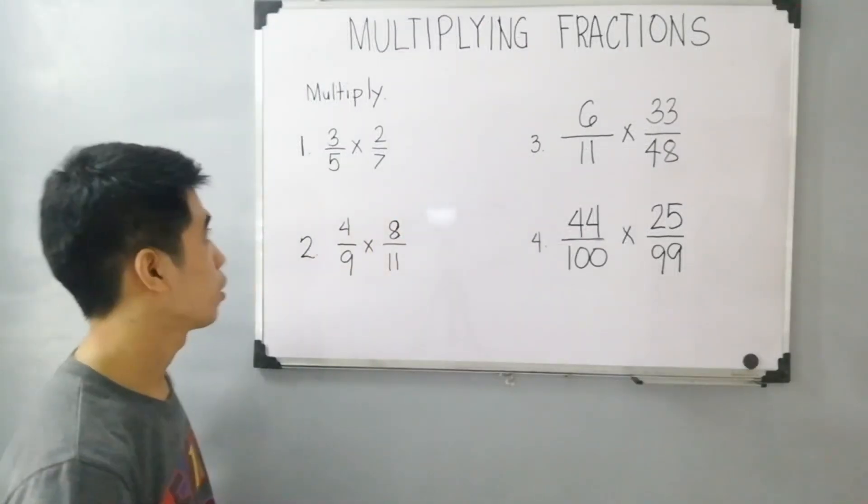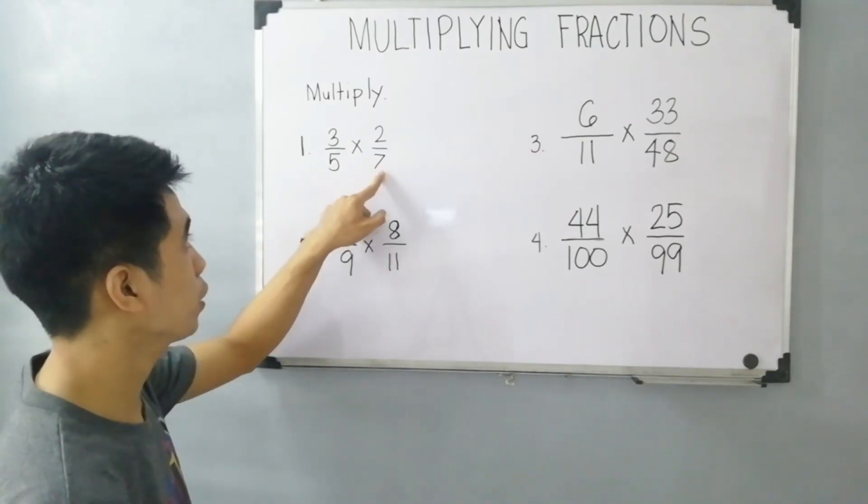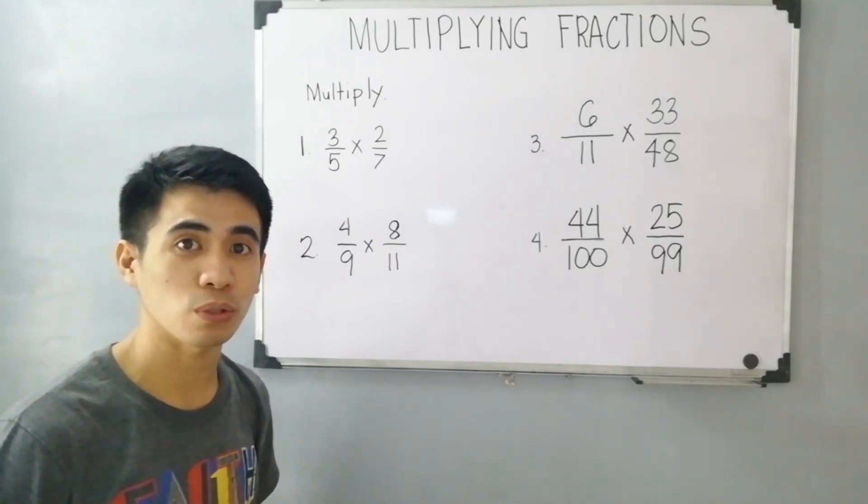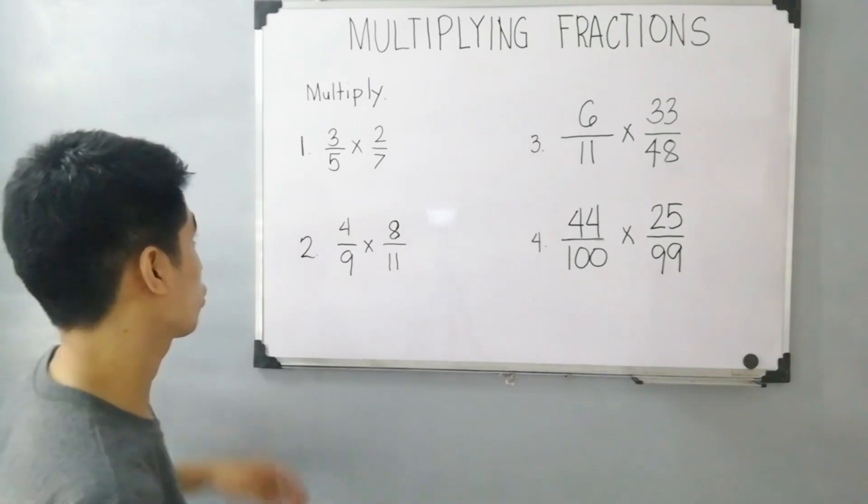For item number 1, let's multiply 3 over 5 times 2 over 7. First step is to analyze if your numerator and denominator can simplify.